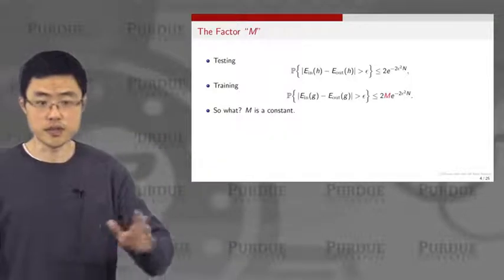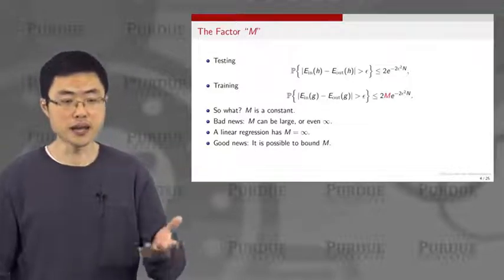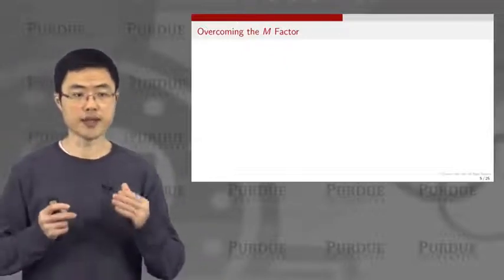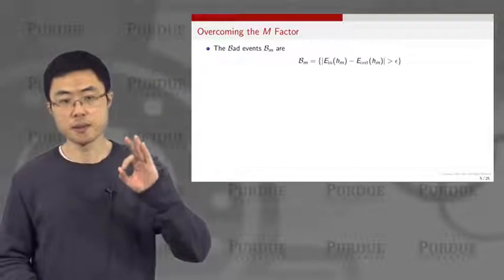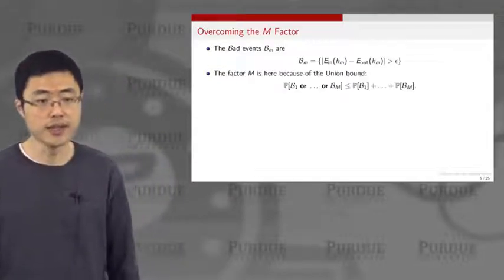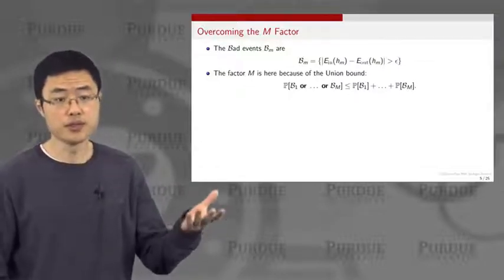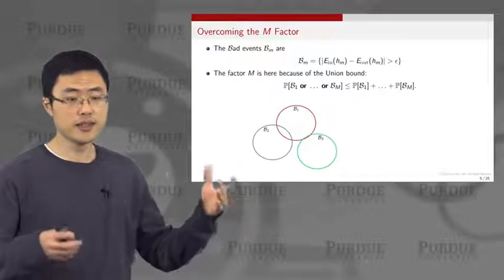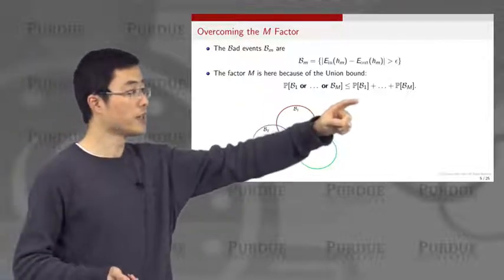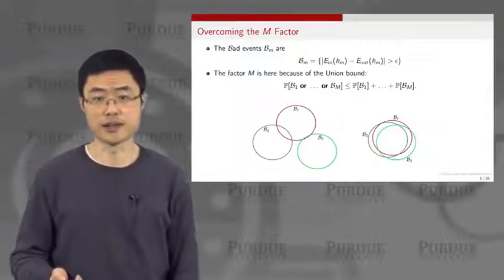M is a constant, but M can be very, very large, even for linear cases. The good news is that we will be able to bound this M in this lecture. The strategy to bound this M factor: we realized that the bad event measures the M hypotheses being outside the epsilon bound, and the source of the problem comes from the union bound. The union bound says that if events are non-overlapping, this upper bound is a pretty good upper bound. But if they're overlapping, then the union bound is a very, very bad upper bound. So what we can do is really to look at the overlapping area.